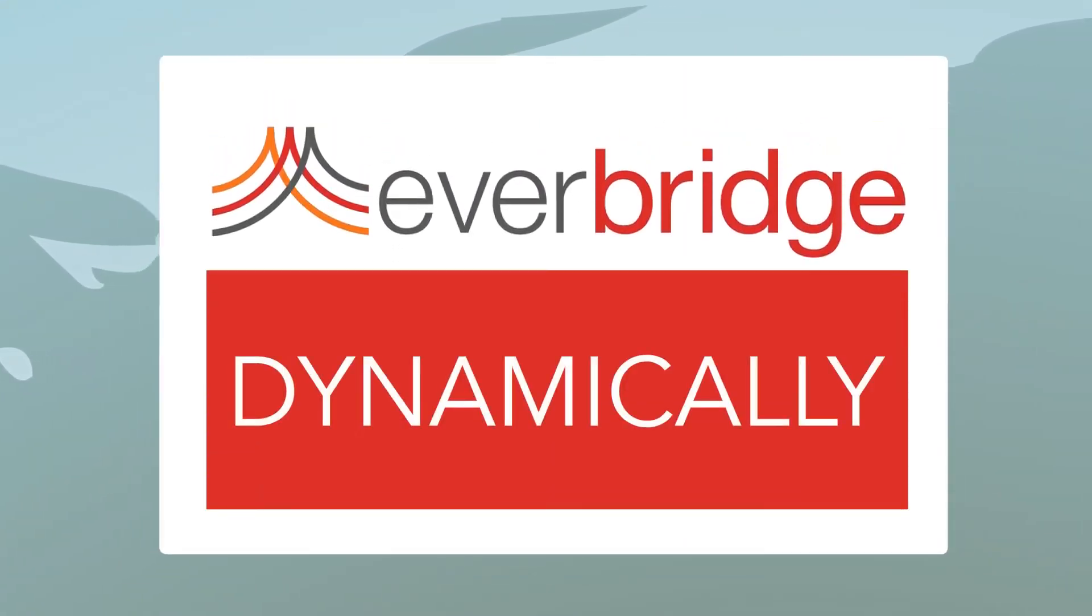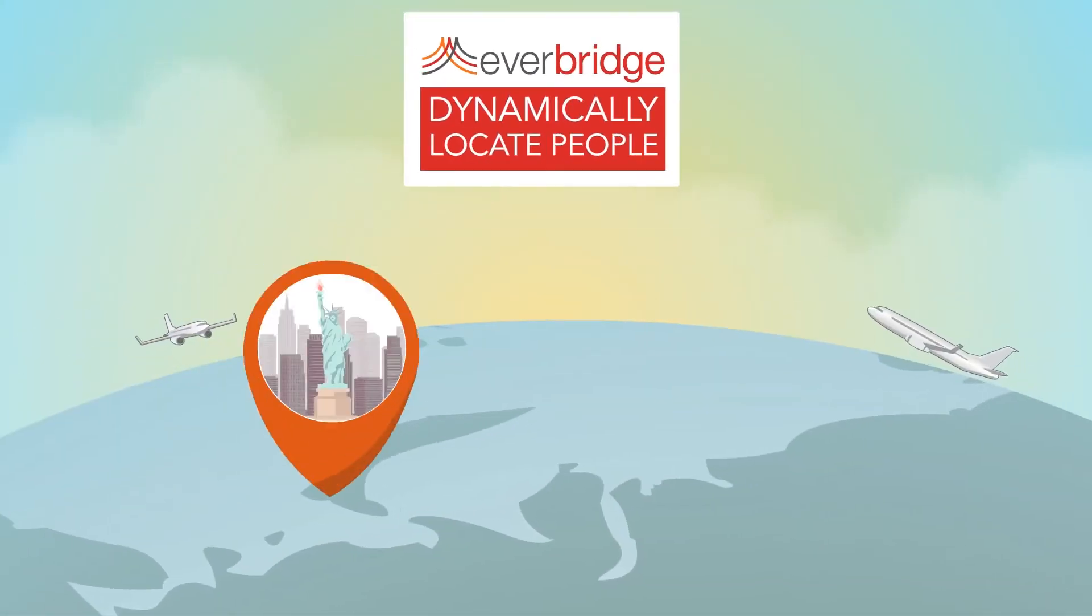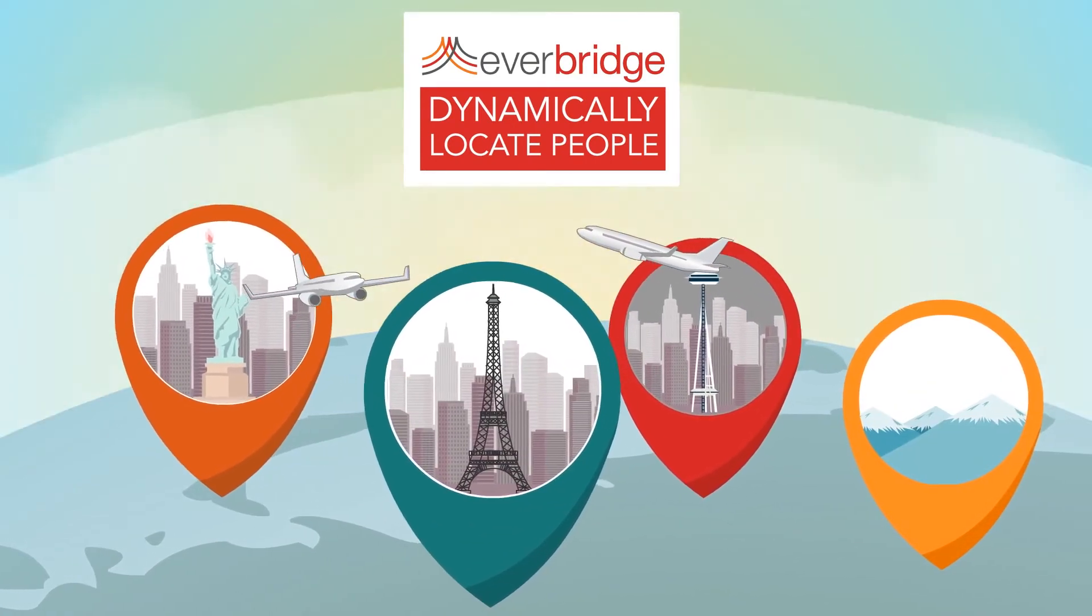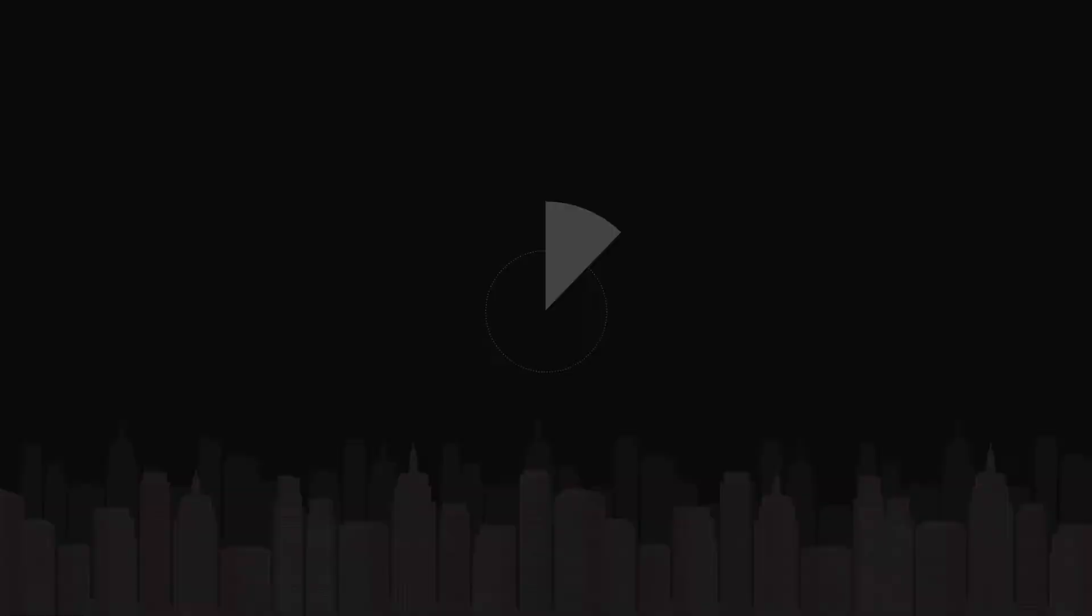Everbridge's ability to dynamically locate people using multiple methods lets you assess threats based on where people really are, not just a static office or home location. You then can initiate an incident.